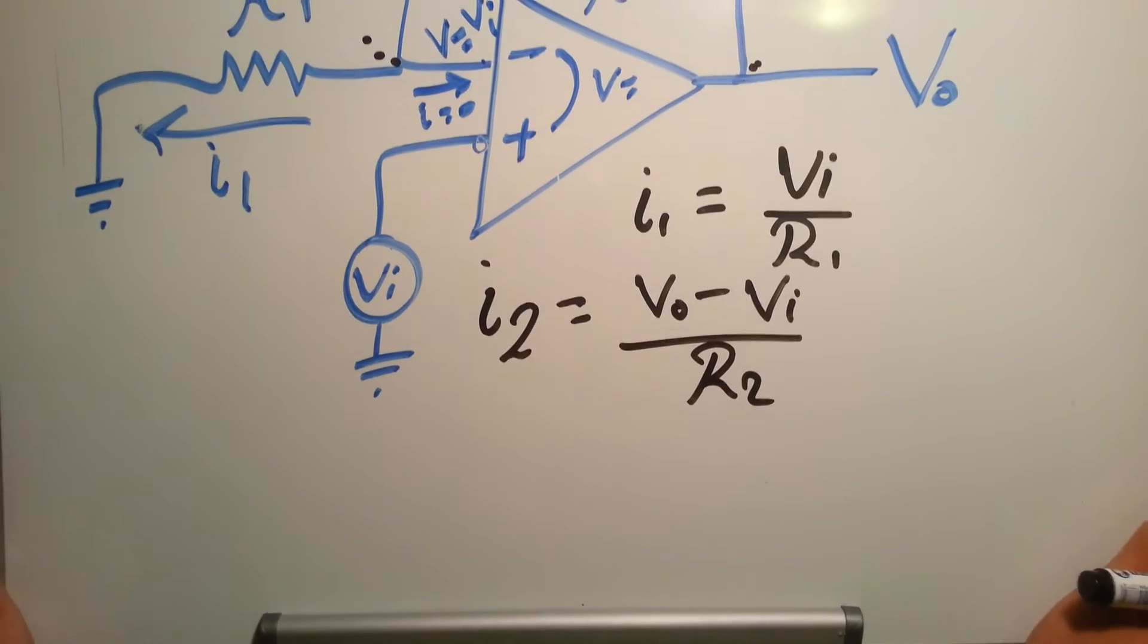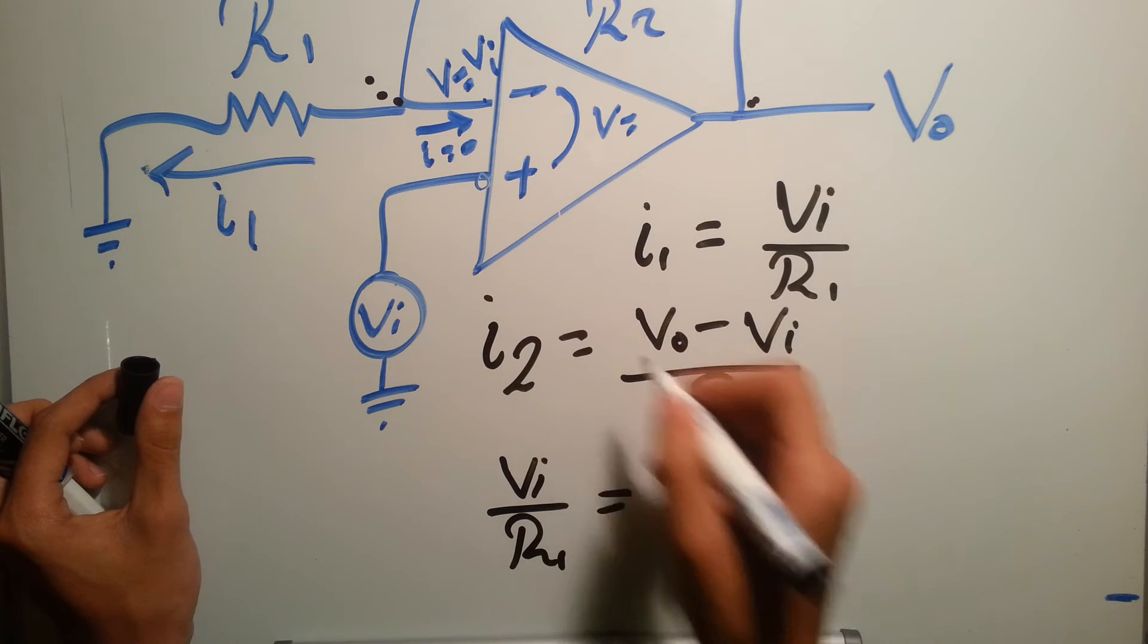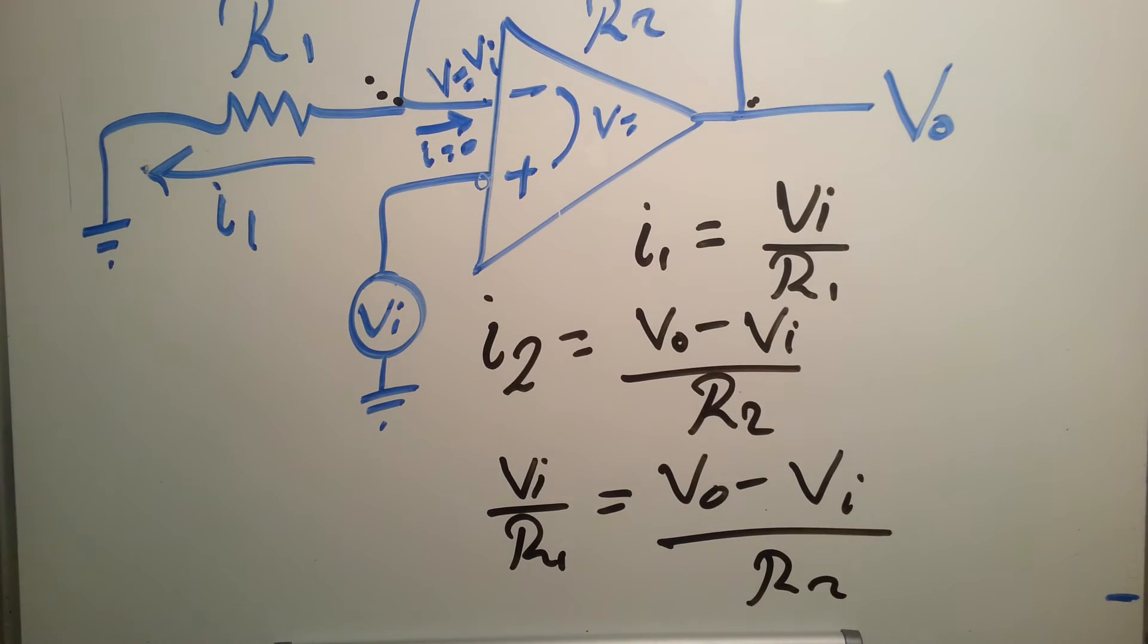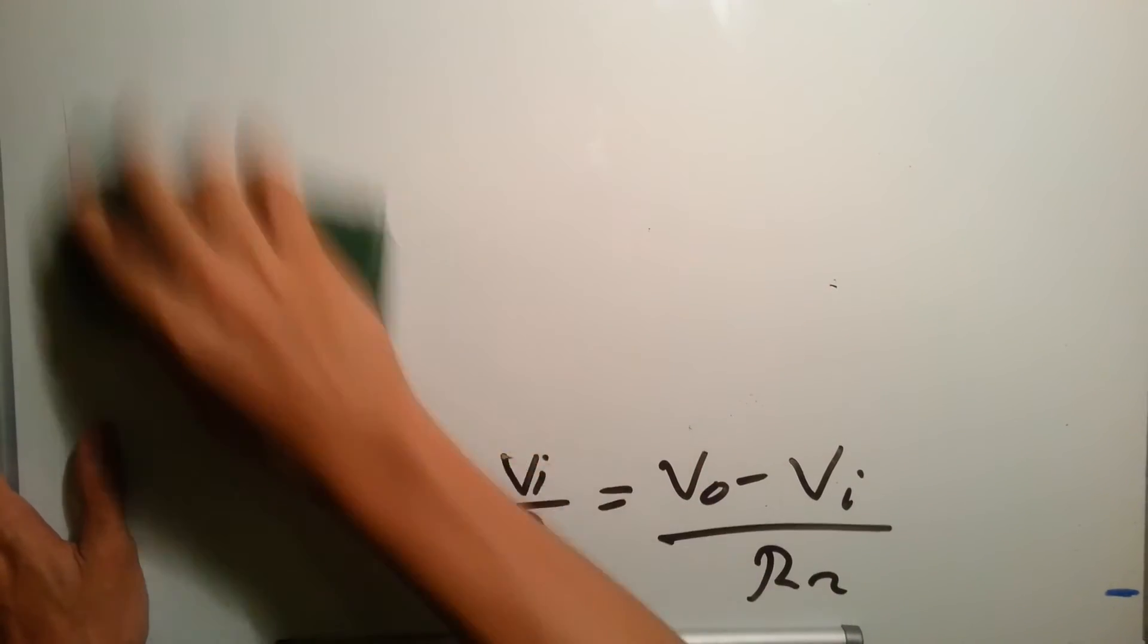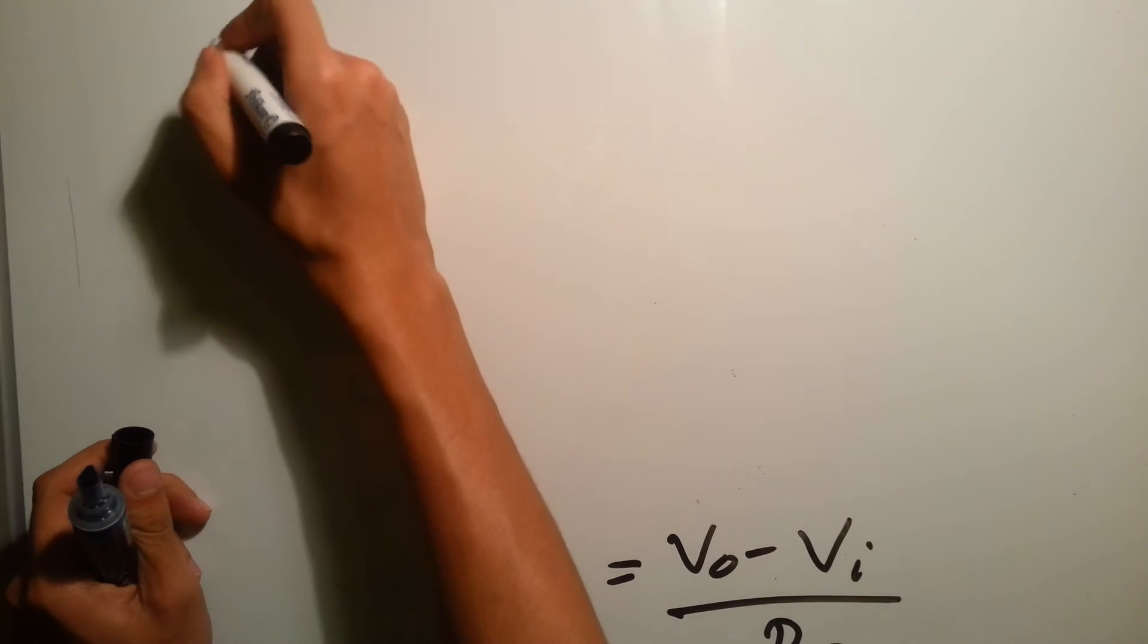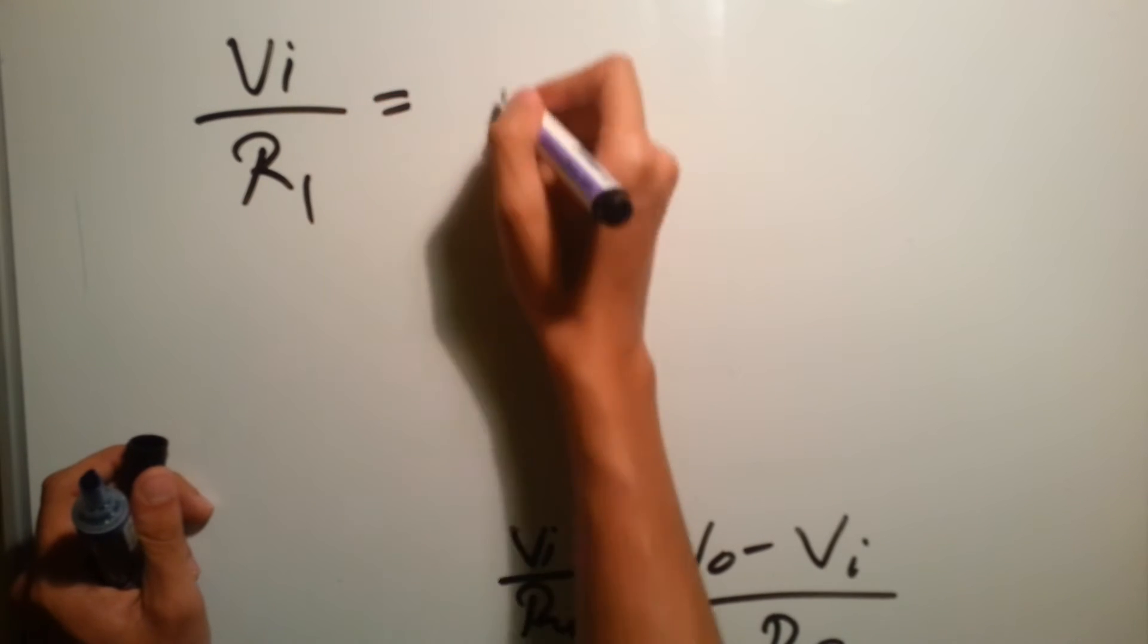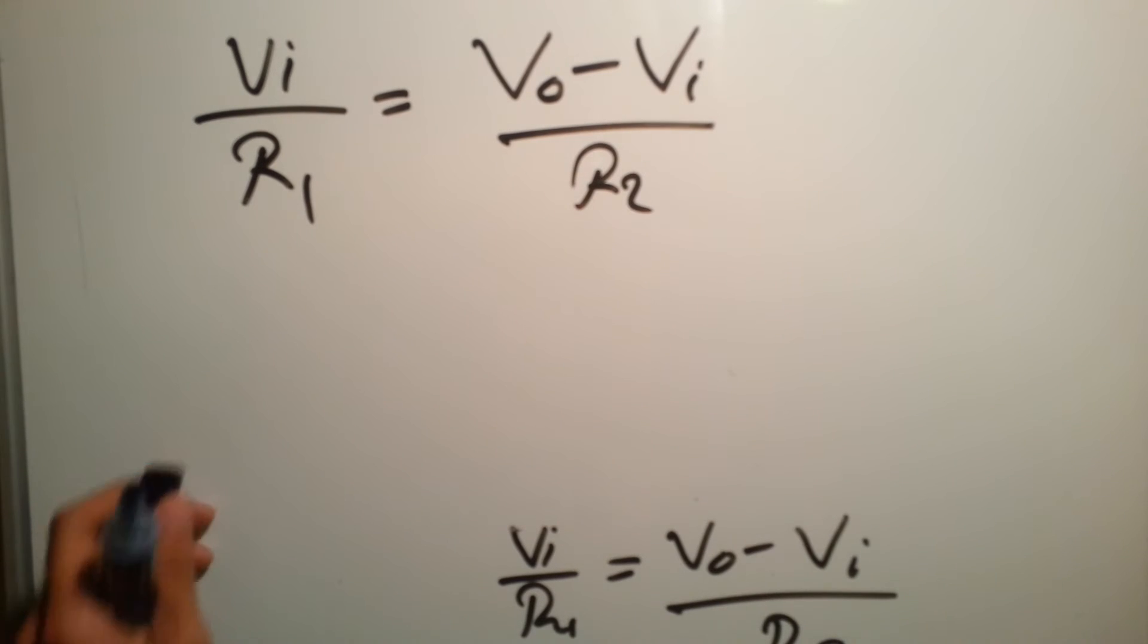So VI over R1 equals V output minus VI over R2. Let's delete this and show you how we continue this calculation to get the voltage gain. So VI over R1 equals V output minus V input over R2.